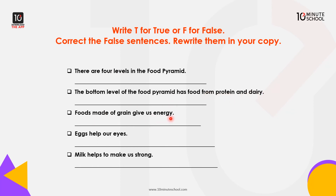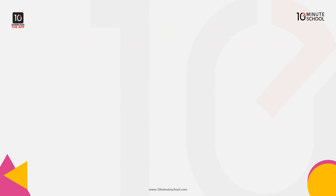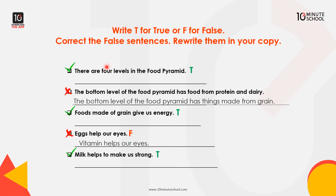Foods made of grain give us energy. Eggs help our eyes. Milk helps to make us strong. The first sentence — there are four levels in the food pyramid — is correct. The second sentence is wrong because the bottom level of the pyramid has things made from grain, not protein and dairy. The third sentence, foods made of grain give us energy, is correct. The fourth sentence, eggs help our eyes, is correct. And the last sentence, milk helps to make us strong, is also correct.